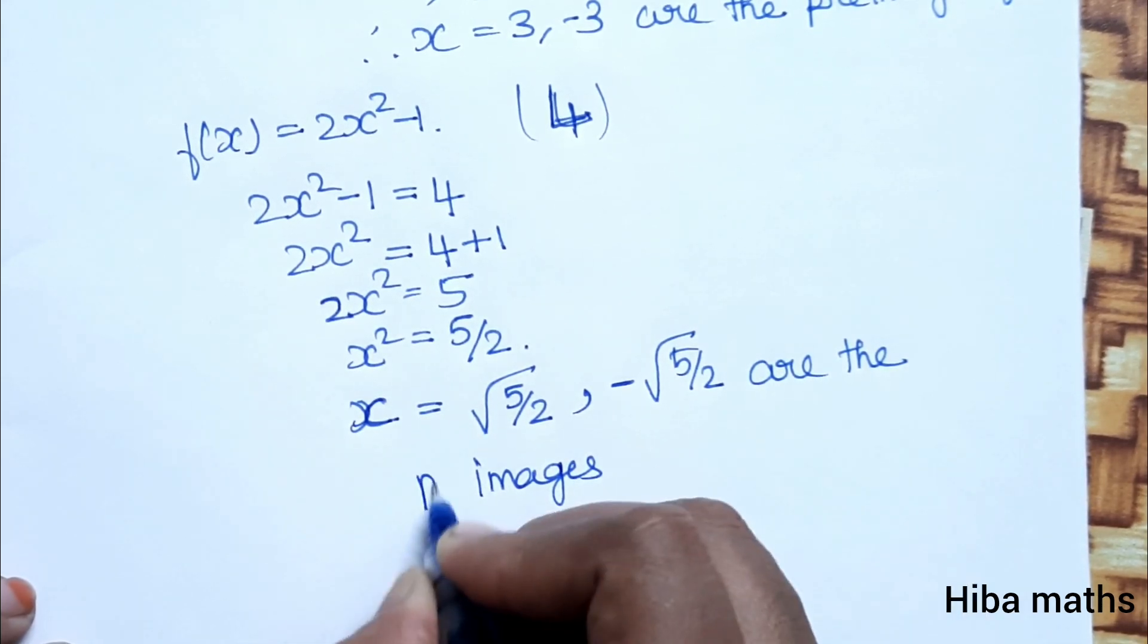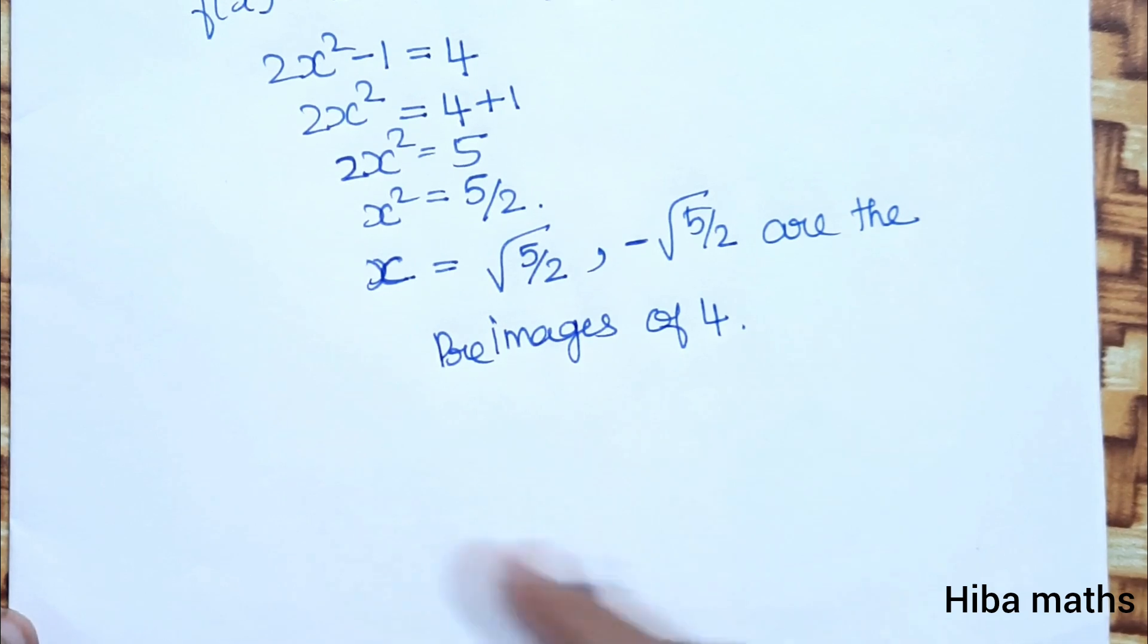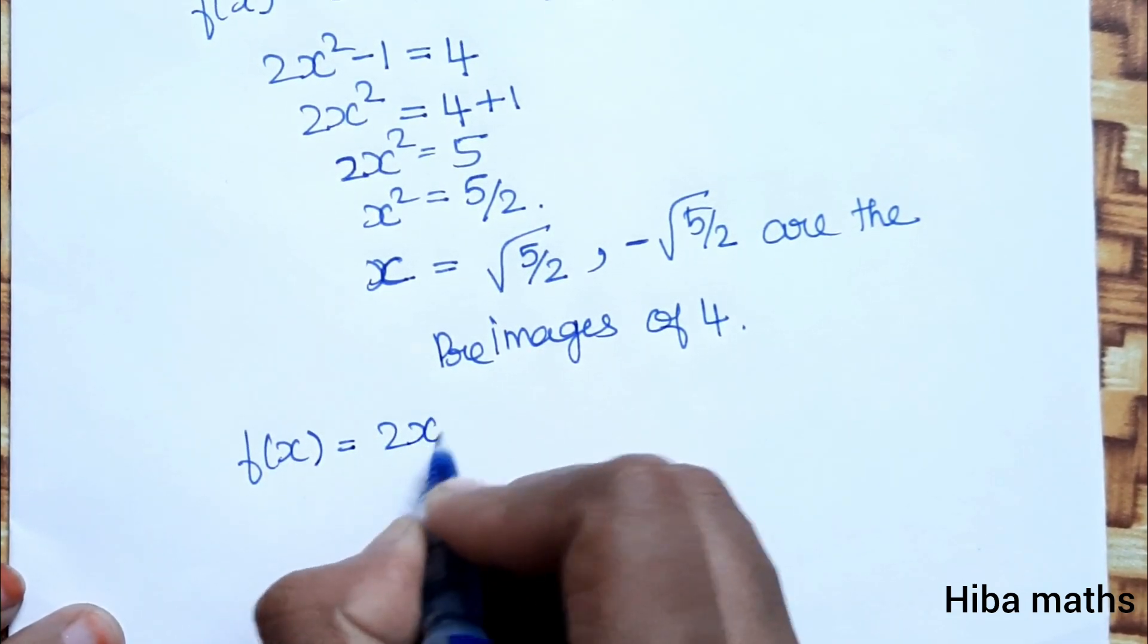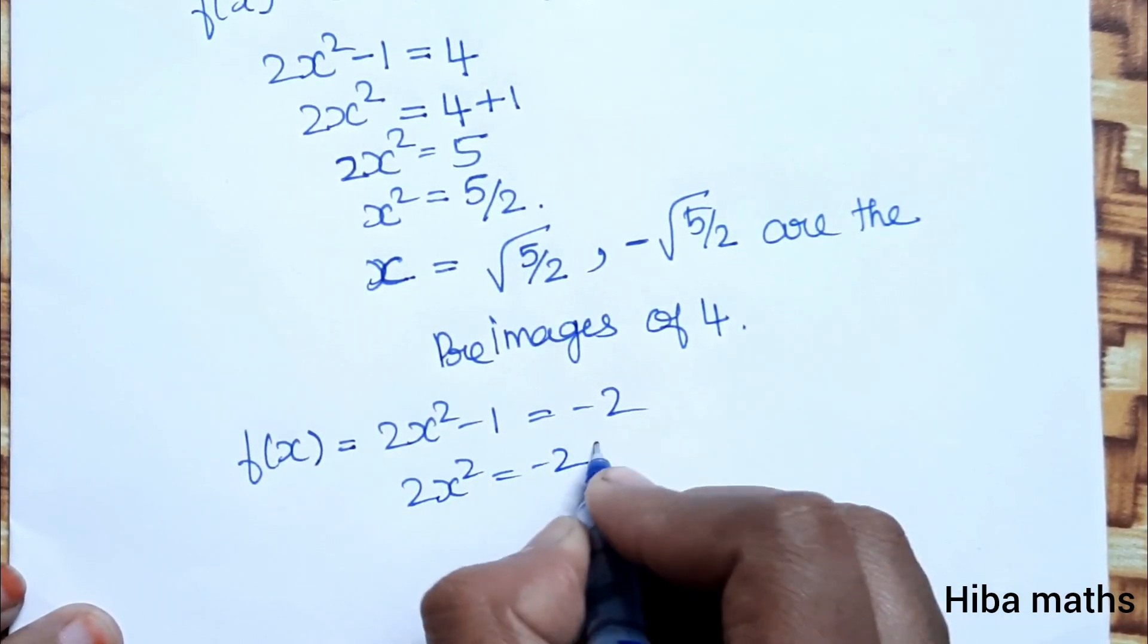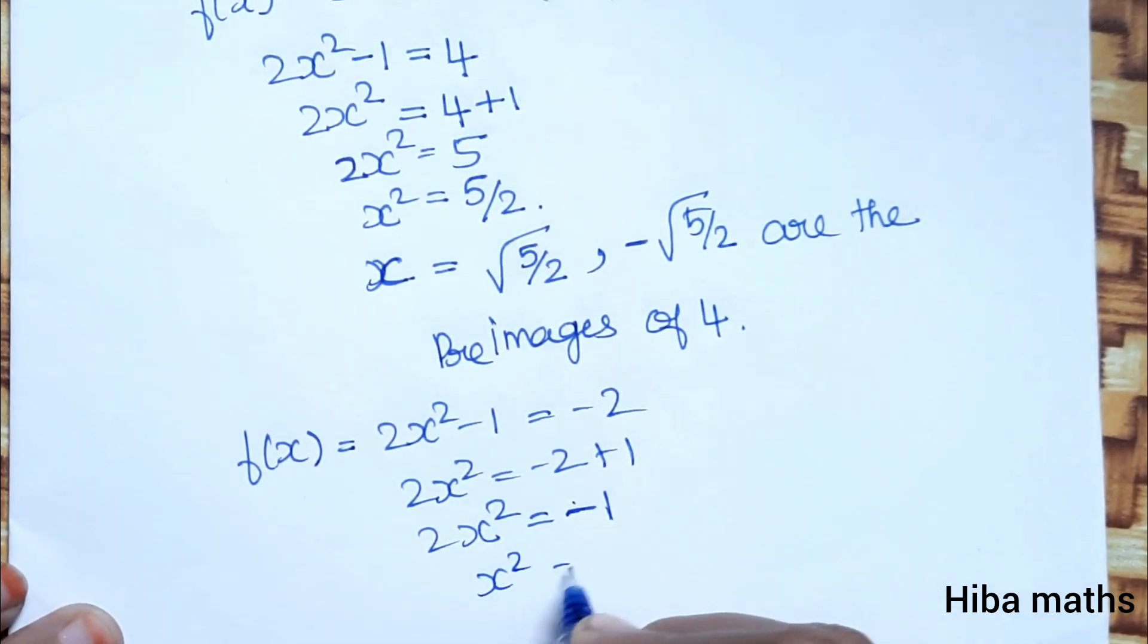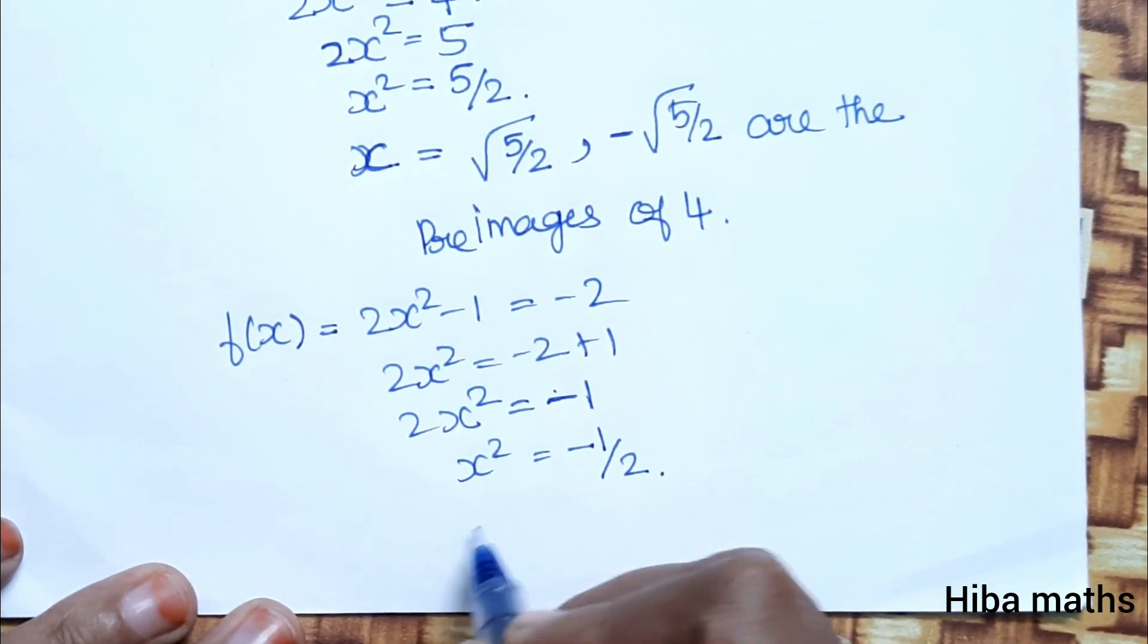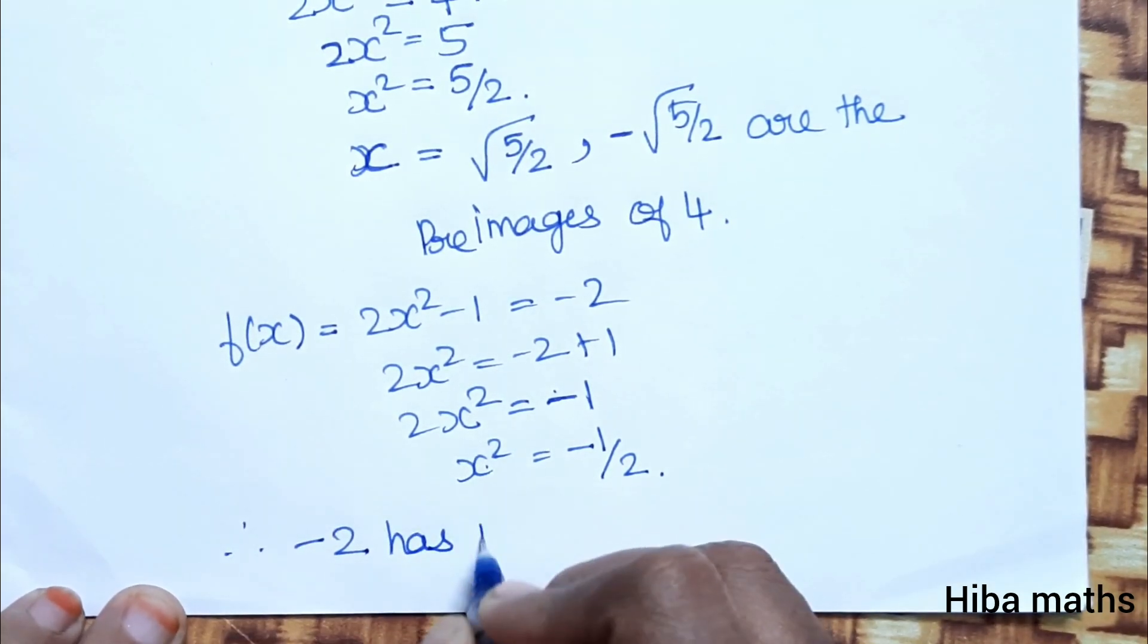For the preimage of minus 2: 2x squared minus 1 equals minus 2. Adding 1, 2x squared equals minus 1. Therefore x squared equals minus 1 by 2. Since x squared cannot be negative, minus 2 has no preimage under f.